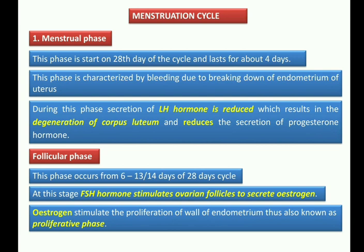The first phase is the menstrual phase. In simple words, what is the menstrual phase? It is the period of bleeding. This phase starts on the first day of the cycle and lasts for about four to five days, depending on the physiological condition of the individual.